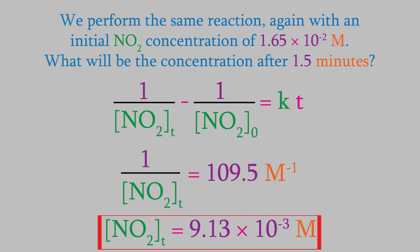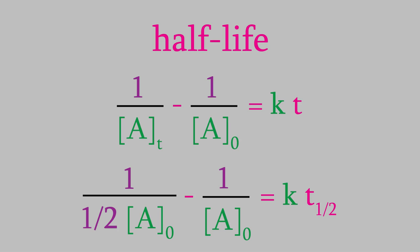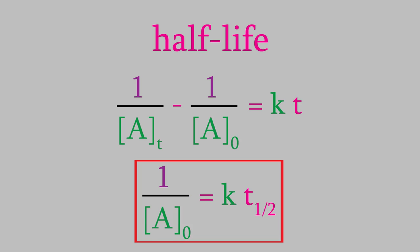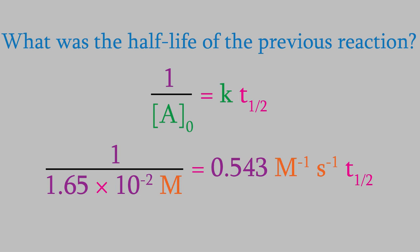Now, just as we did for first order reactions, we can calculate the half-life of second order reactions. At the half-life, half the reactants have been used up, so the concentration is half the original. Substituting one-half A-zero for A-t into the equation, we get 2 over A-zero minus 1 over A-zero for the left side. Combining those gives 1 over A-zero. So the half-life equation for a second order reaction is t-half equals 1 over k times A-zero. Using the values from the previous problem, we get a half-life of 112 seconds.